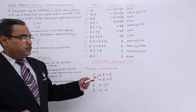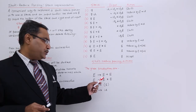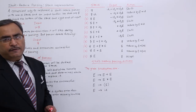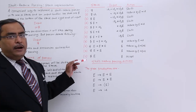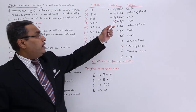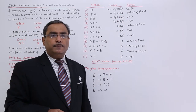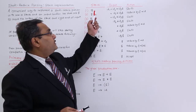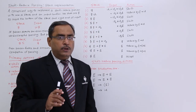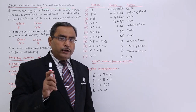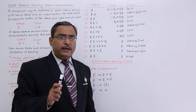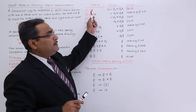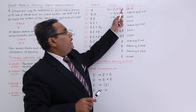Here are the production rules: E produces E plus E, E produces E star E, E produces E within brackets, and E produces ID — where ID stands for identifier, that is a variable. This is our shift-reduce parser example. The input string is ID1 plus ID2 star ID3, with dollar appended at the end. ID1, ID2, ID3 are numbered only for identification so you can track which ID is being handled. Initially the stack has dollar at the bottom and the full input string with dollar appended is in the input buffer.